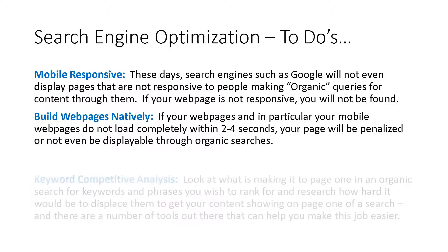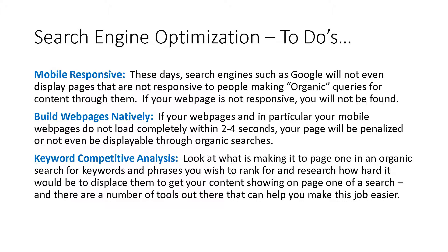Do competitive analysis on your keyword research and where you place those keywords in relation to your competitors. Look at what is making it to page 1 in an organic search for keywords and phrases you wish to rank for, and research how hard it would be to displace them to get your content showing up on page 1 instead. There are a number of tools out there that can help you make this job easier. The bottom line is that you want to get to page 1 when ranking for the words and phrases that you choose — you don't want to do all this work to rank on page 10 where much fewer content searchers get to.